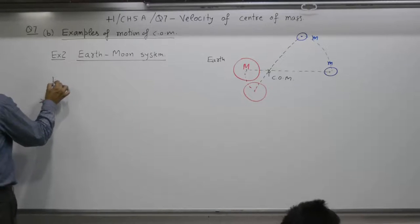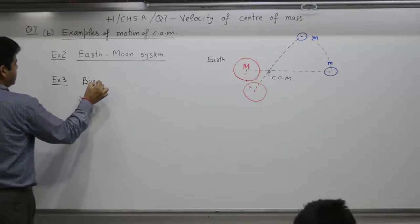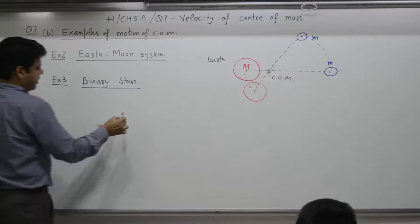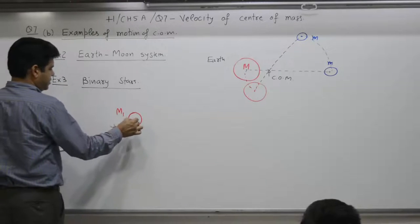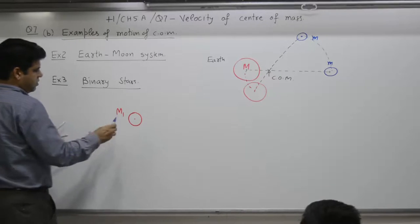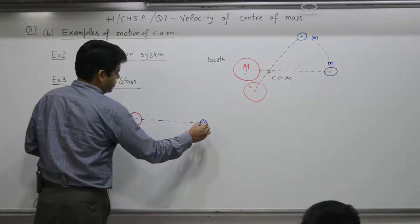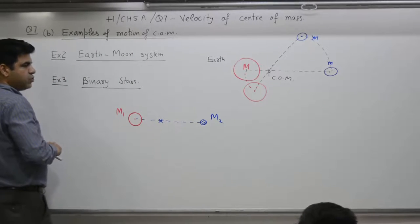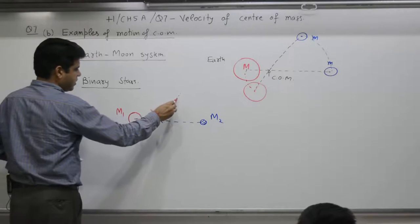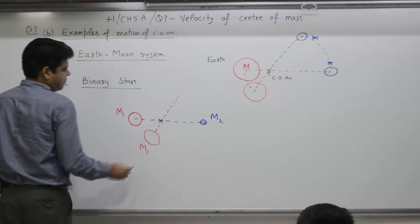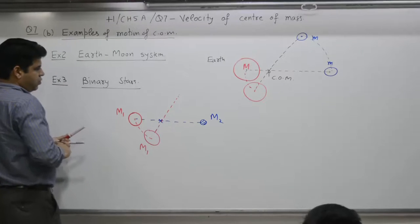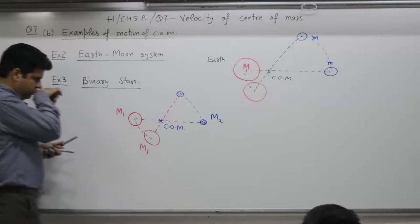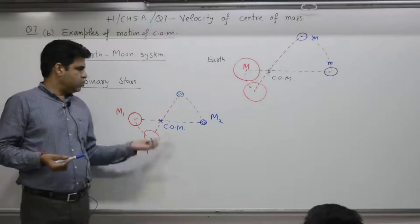Example number three is binary star. It is the same example, no change. Again two stars, star number one with mass m1, star number two with mass m2, relatively small. They have center of mass at this position. They move because of mutual attraction. Both move about center of mass. Two minutes to write, no change.